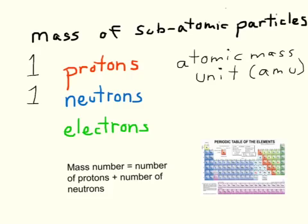And we can define a quantity called the mass number. And the mass number is defined as the number of protons plus the number of neutrons for any atom.